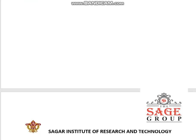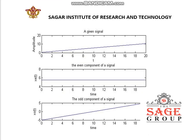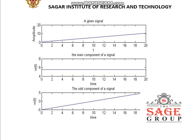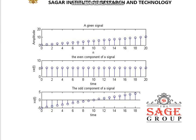Now I will run this MATLAB program and the waveforms will be generated. For the continuous time signal, the signal is drawn with the given waveform, and the even and odd components are computed according to the formula and their graphs are shown in the figure window. Similarly for the discrete time signal, the given signal is the first waveform, the even component is the second, and the odd component is the third. This is all for today, thank you.